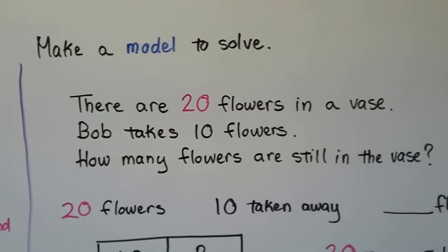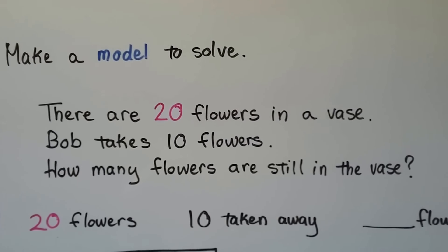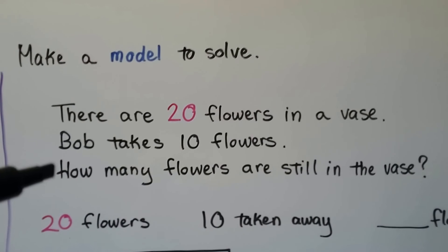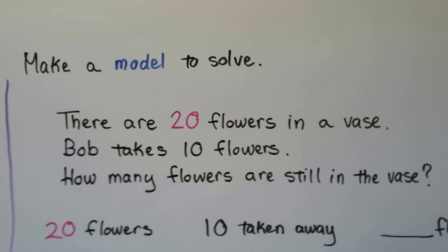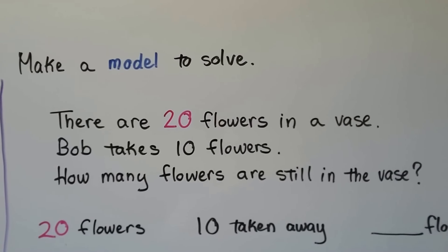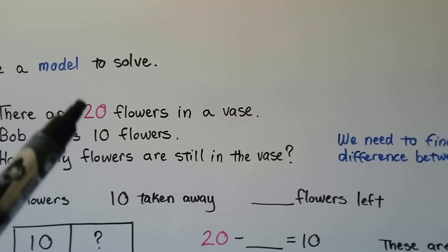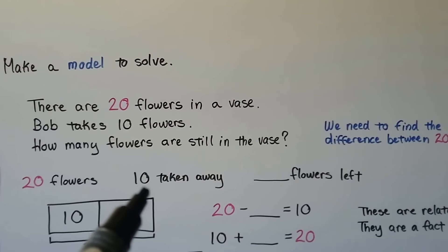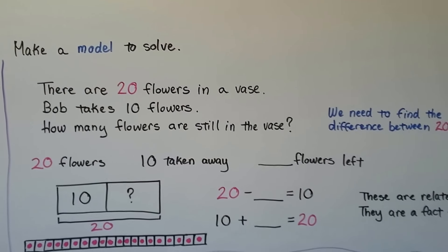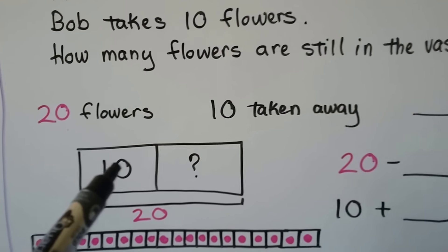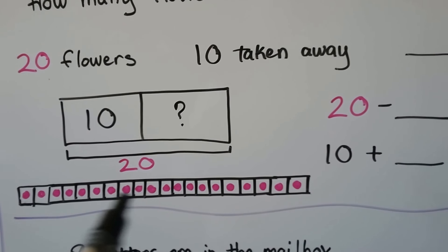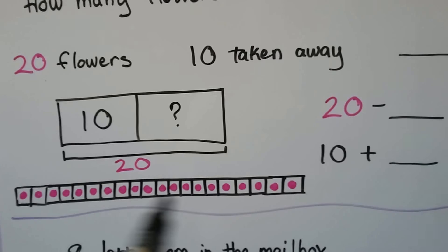We can make a model to solve. There are 20 flowers in a vase. Bob takes 10 flowers. How many flowers are still in the vase? We need to find how many flowers are still in the vase. We need to use that there were 20, but Bob took 10 of them. We need to take away 10 from 20 — find the difference between 20 and 10. We can make a bar model and say 10 and some number equals the 20 flowers.